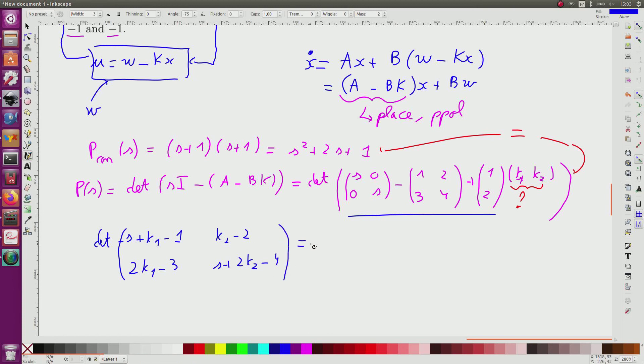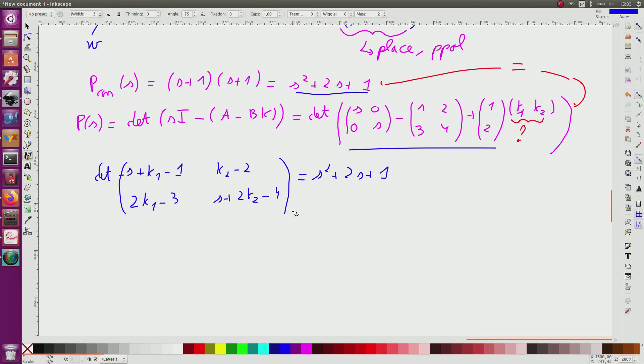And this should be equal to S squared plus 2S plus 1. So I develop and alternatively I get S squared plus S multiplied by K1 plus 2K2 minus 5 plus K2 minus 2 should be equal to S squared plus 2S plus 1.